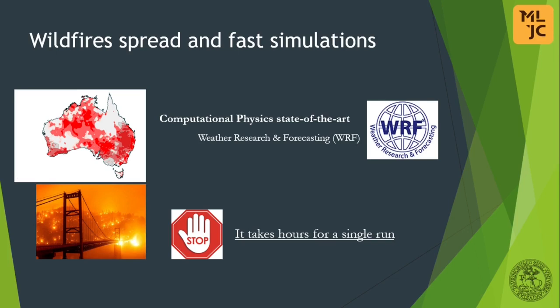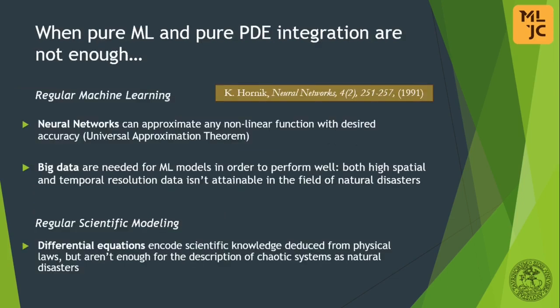Our benchmark is the Weather Research and Forecast System, in which a wildfire simulation can last for several hours. To speed up the simulation we wanted a machine learning approach which was not only data-driven. By looking at regular machine learning models, we can exploit the fact that neural networks can approximate any non-linear function with arbitrary accuracy, which is the universal approximation theorem.